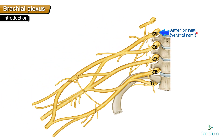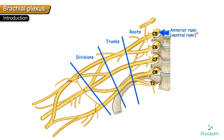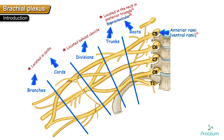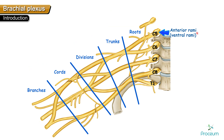The brachial plexus consists of the following parts: roots, trunks, divisions, cords, and branches. The roots and trunks are located in the posterior triangle of the neck — they are supraclavicular. The divisions are located behind the clavicle. The cords and branches are located in the axilla, so they are infraclavicular.